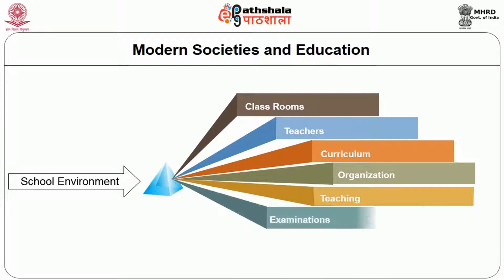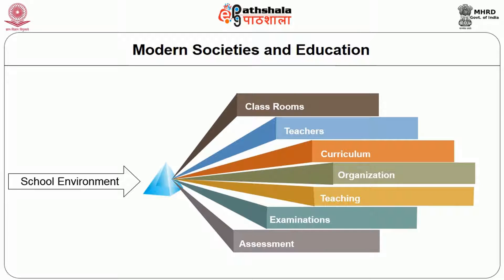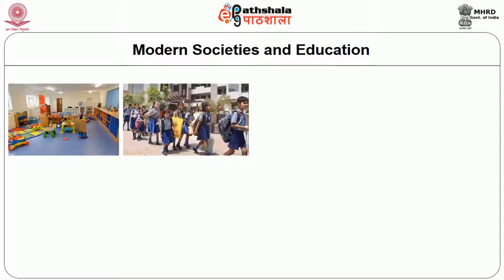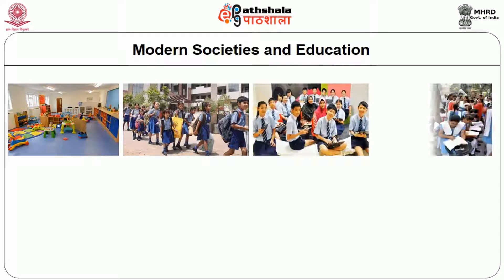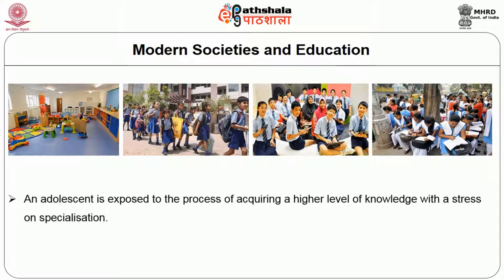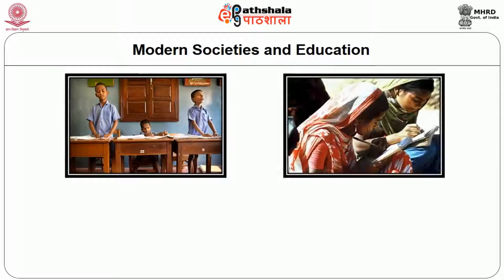The school environment is associated with the concept of classrooms, teachers, curriculum, organization, hours of learning or teaching, examinations, and patterns of assessment. Beginning with preschools and continuing through primary, secondary, and higher secondary education, it progresses to a system of imparting life skills and knowledge in select fields — known as higher education — where an adolescent is exposed to the process of acquiring a higher level of knowledge with a stress on specialization.